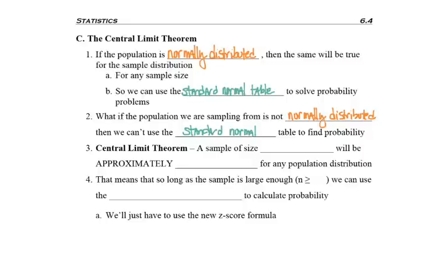Except there's an exception, which is called the Central Limit Theorem. And the Central Limit Theorem states that if you have a sample of size 30 or more, then your sample will be approximately normally distributed.